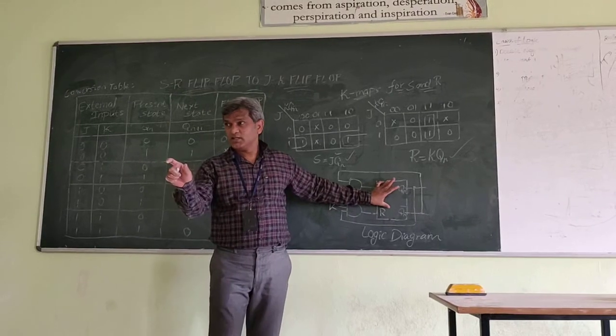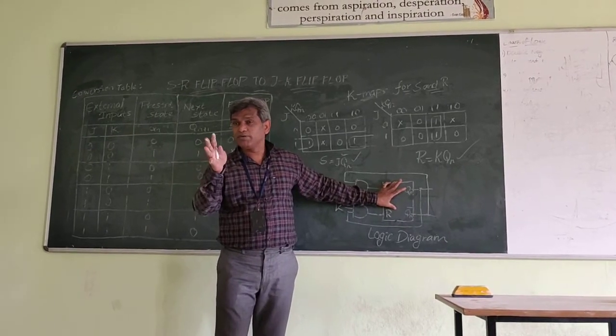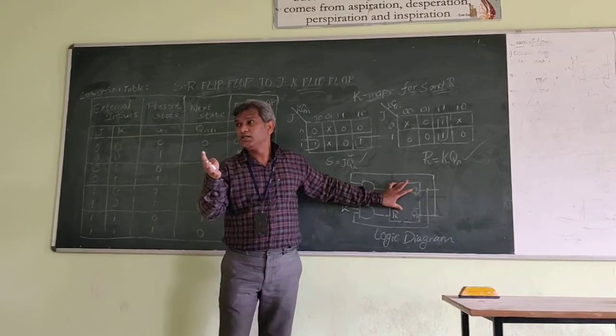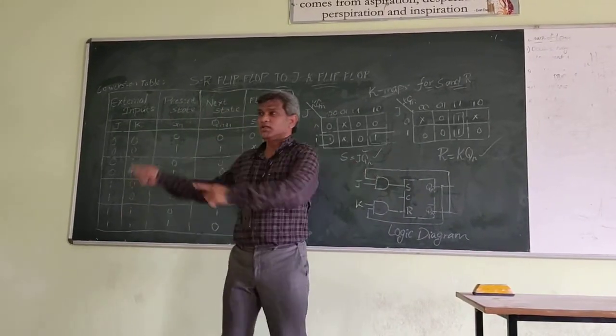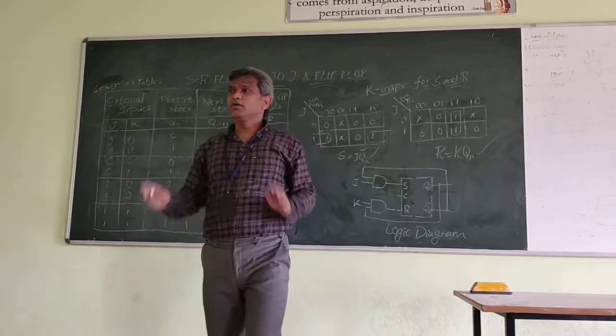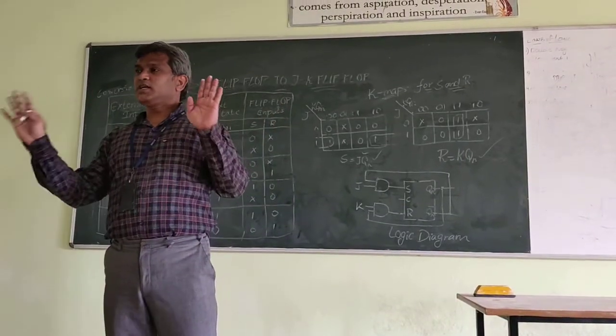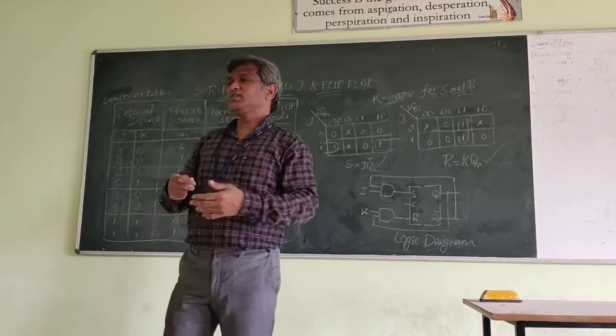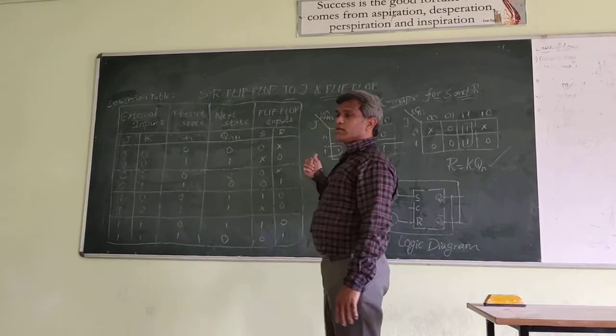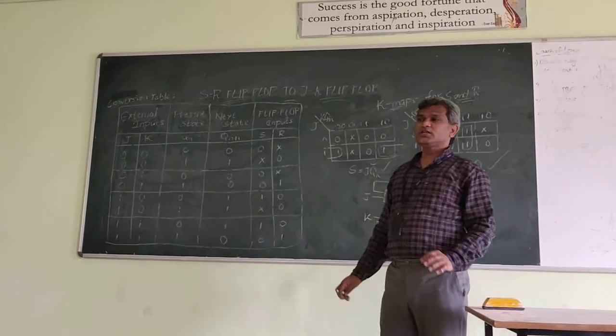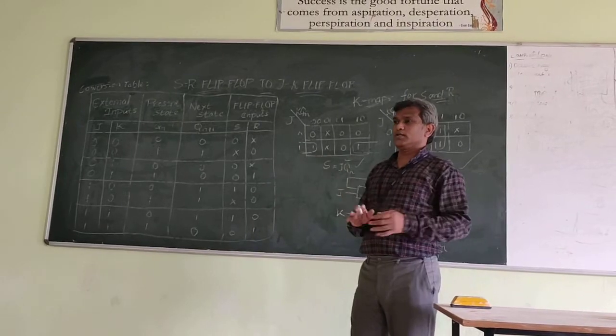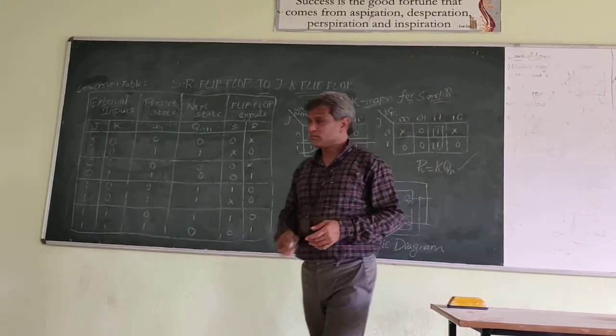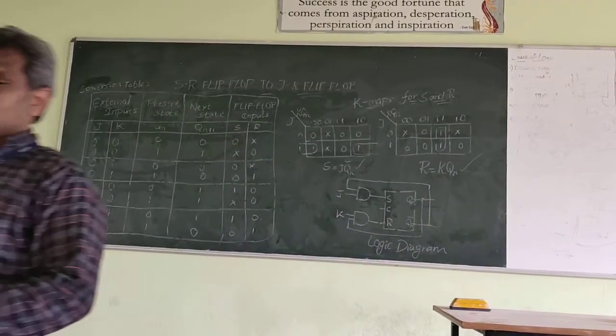When the SR flip-flop is given, we can easily convert into the JK by simply adopting this. This has to come from based on excitation tables of J, JK and SR with the excitation tables. With Qn bar. This is something that we can apply. Okay, I'll touch it. Okay.